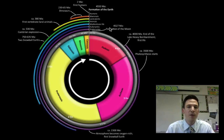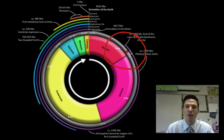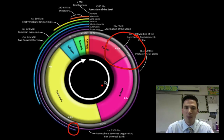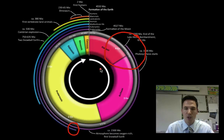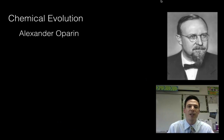What we're really going to be focused on, because this is the origin of life, is pretty much this point over here — how did we go from nothing during this Hadean era to the first life forms. We'll even touch on how eukaryotic organisms came to be a little later. But really our focus is how did we go from nothing to something. That brings us to our first scientist: Alexander Oparin.